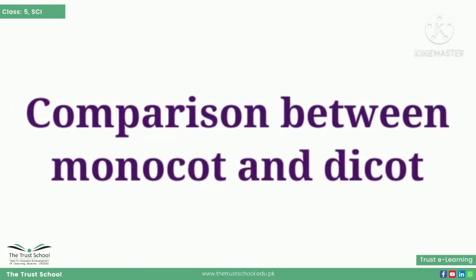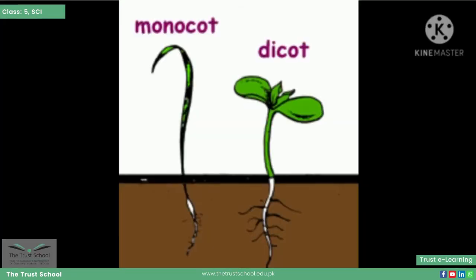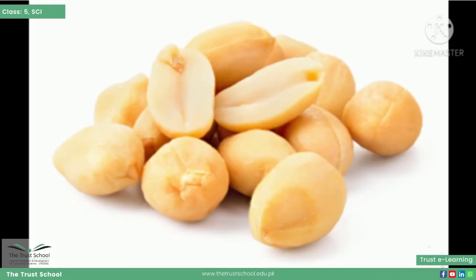Flowering plants are divided into two groups: monocots and dicots. Now we will study the comparison between monocots and dicots. Mono means one and di means two. So monocots bear one cotyledon and dicots bear two cotyledons. As you are looking in the picture, the peanut has two cotyledons, that's why it is a dicot.